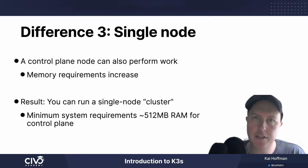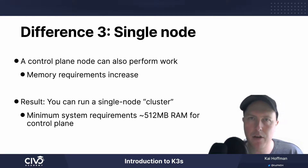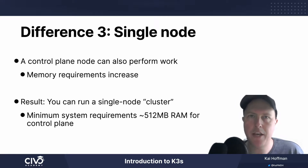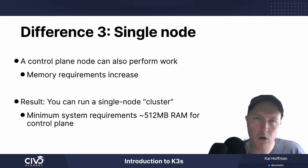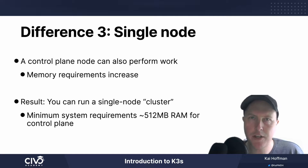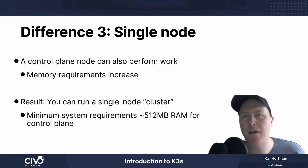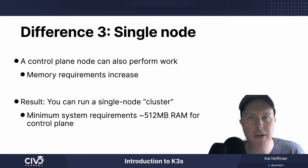The third difference is the single node. The single binary construction means that by running the K3S command, you can stand up a single node. That node is a control plane node, but it can also perform work. Obviously, if you're adding a workload to such a cluster, the memory and other system requirements increase. So even though you can technically run K3S on a device that only has about 512 megabytes of RAM, that's really designed only around the control plane functions — the moment you add other types of workloads, you're looking at increased system requirements.